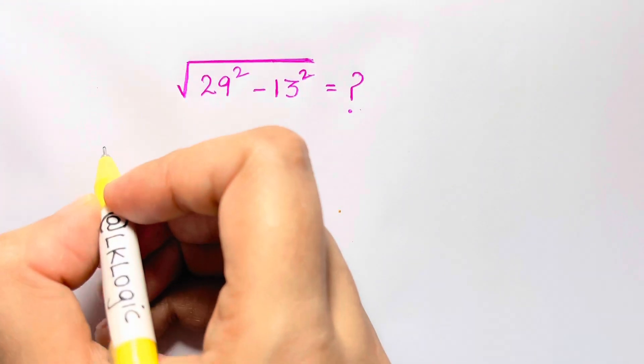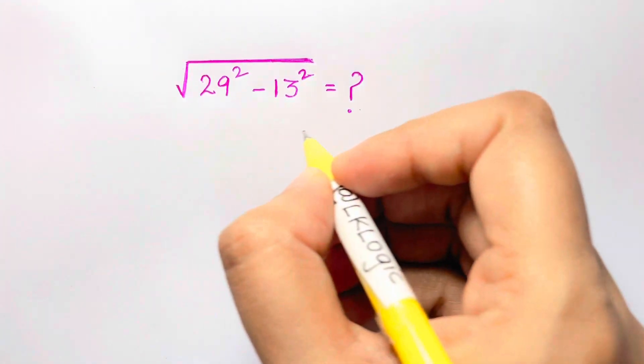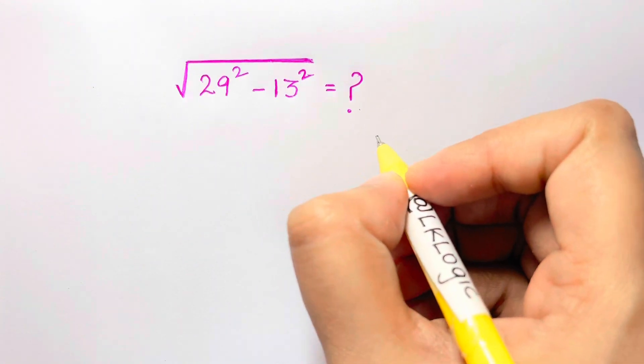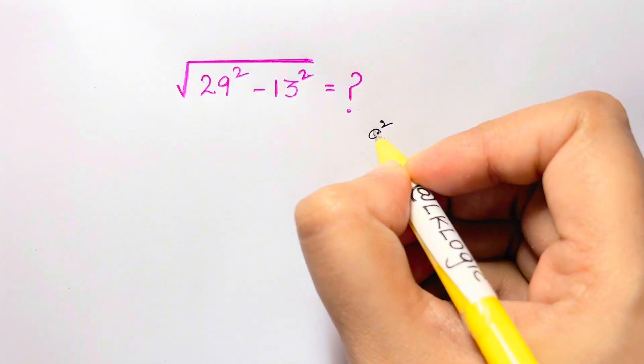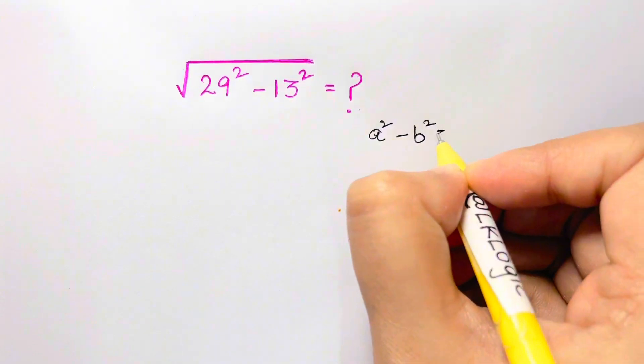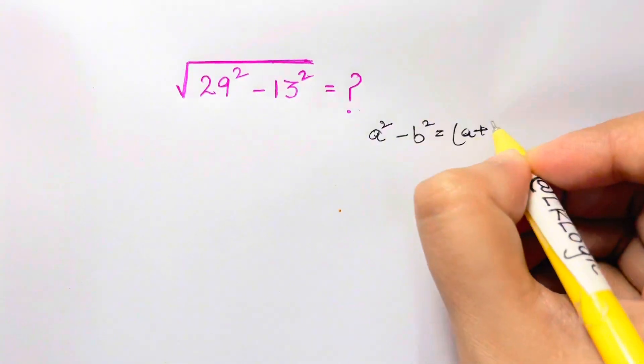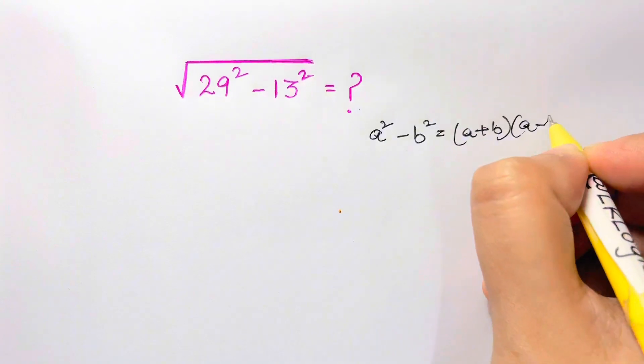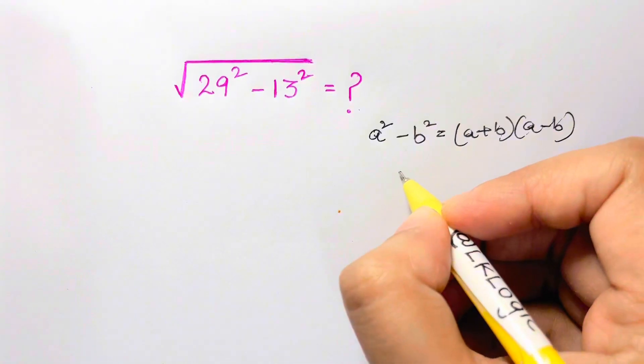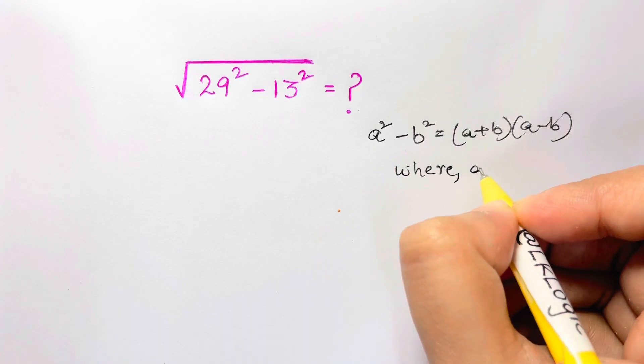So what do we do first? You should remember this identity: a squared minus b squared is equal to a plus b times a minus b. Now what is a here? Where a is 29 and b is 13.